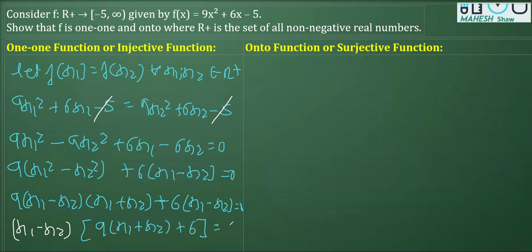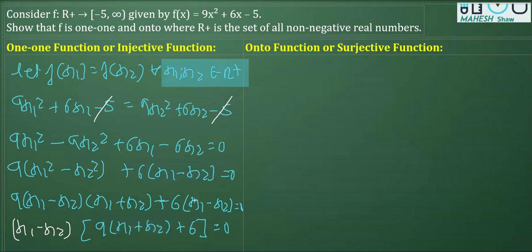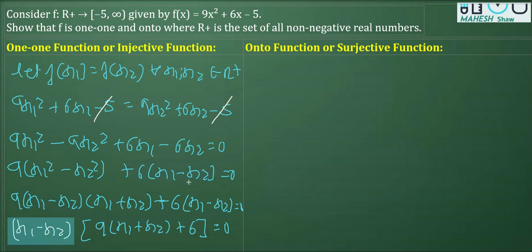When the product of two numbers is equal to zero, either one or both must be zero. Since x₁ and x₂ are positive real numbers, the term 9(x₁ + x₂) + 6 cannot be zero. Therefore, x₁ - x₂ must equal zero, which gives us x₁ = x₂. Hence the function is proved to be one-one.